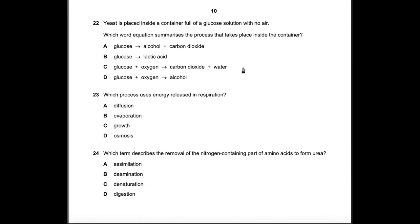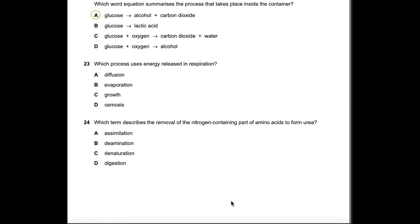Question 22: Yeast is placed in a container full of glucose solution with no air — a hint that this is anaerobic respiration, not aerobic. Options C and D (aerobic products) are eliminated. Option B describes anaerobic respiration in muscles, not in yeast cells. Yeast produces alcohol as a waste product during anaerobic respiration. Answer: A.